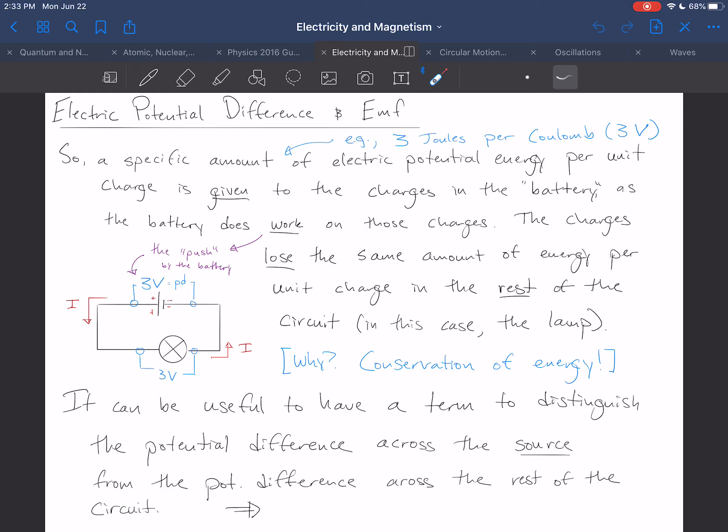Energy can neither be created nor destroyed. So, that energy is given to the charges in the battery, and we'll ask ourselves a question later about how the battery got the energy, but for now, it's given to the charges in the battery, and then the charges give up that energy when they go through the lamp. That energy becomes light and heat in the lamp.